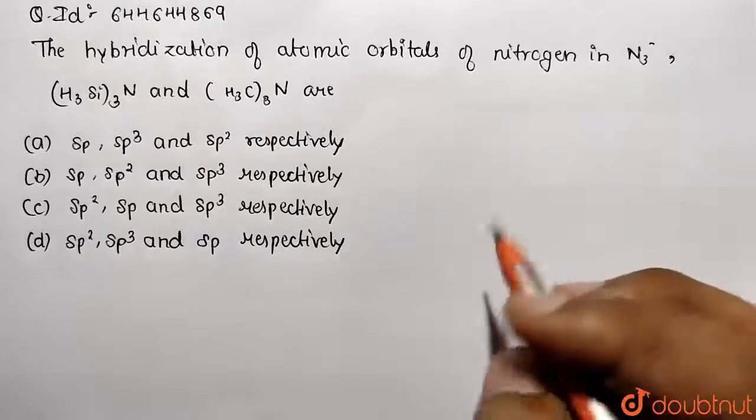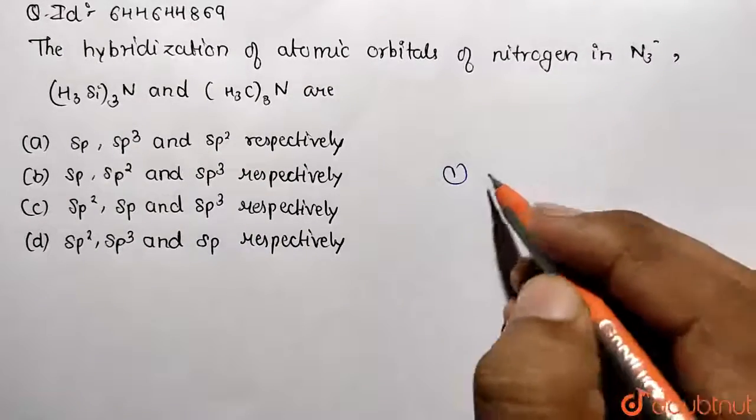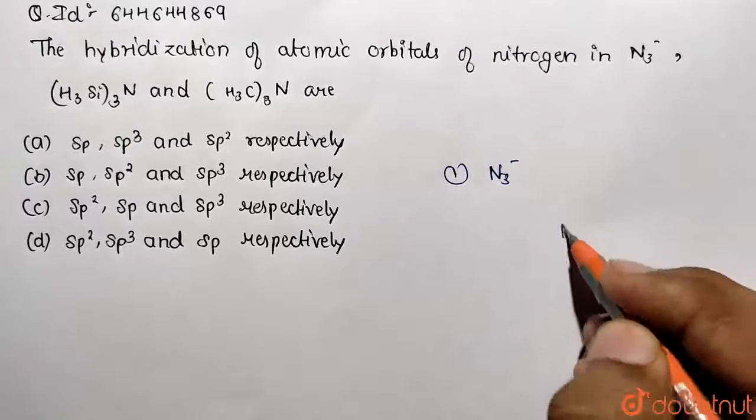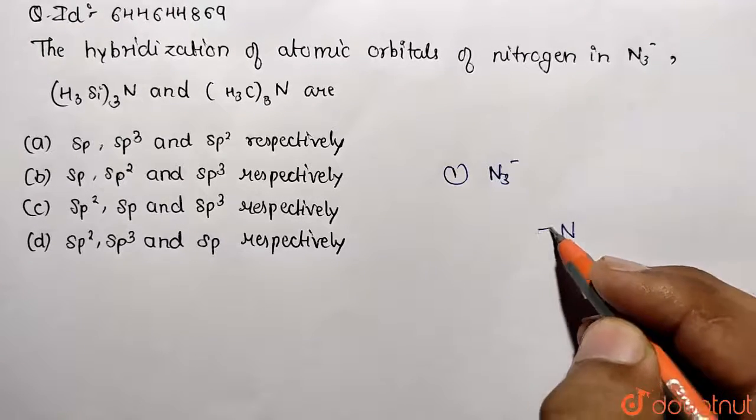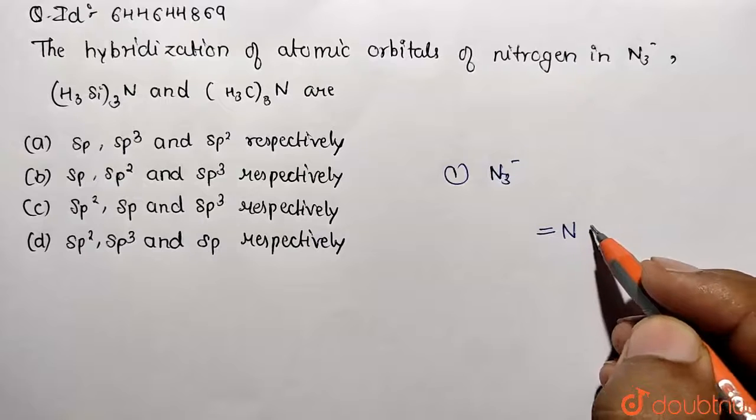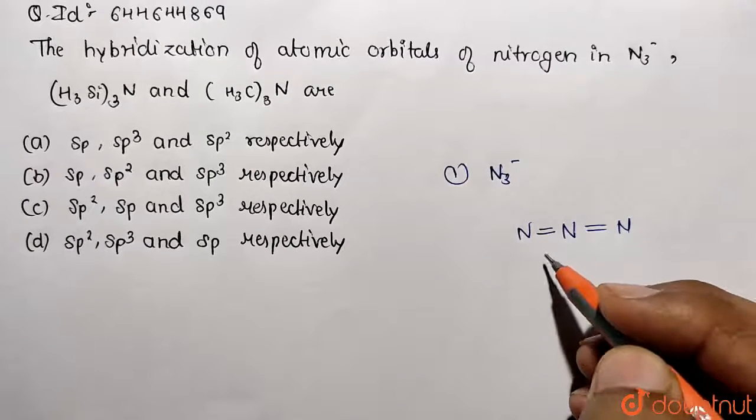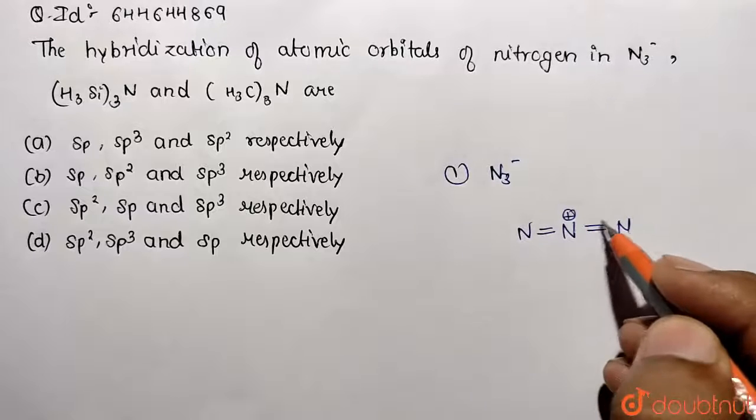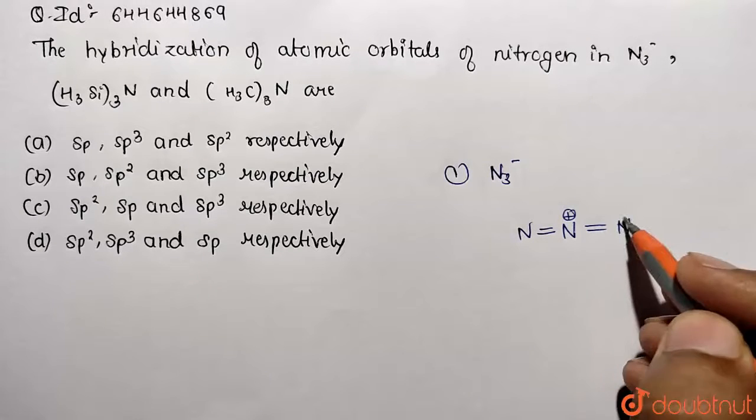First of all, draw the structure. Correspondingly, if we are drawing N3-, what will be that shape? Nitrogen first of all double bond will be made over here, and this side it's going to be double bond with nitrogen again. We know nitrogen is having one lone pair, so over here this lone pair has been donated so this positive sign is shown over here.